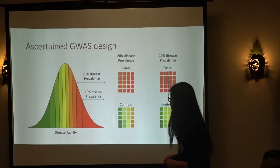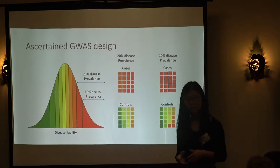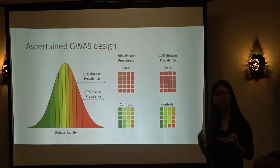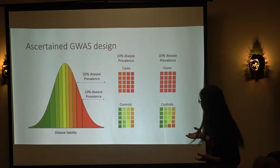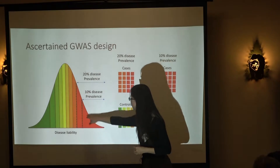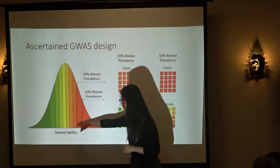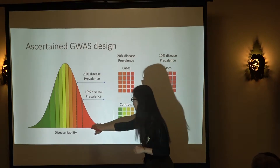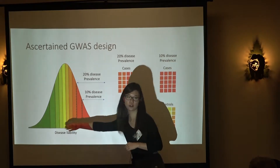In an ascertained GWAS design, typically 50% of the cohort are cases and 50% are controls. You go out into the population and collect that number of cases and controls. Hopefully, if you applied the same criteria used to define disease prevalence — say 20% — all of the cases fall on the high-liability side of the distribution and all controls fall on the other side.